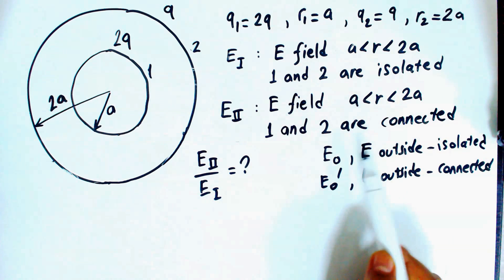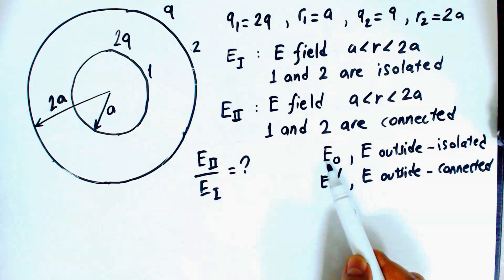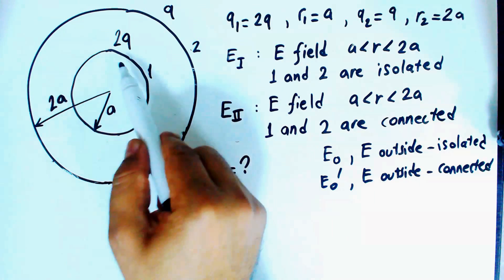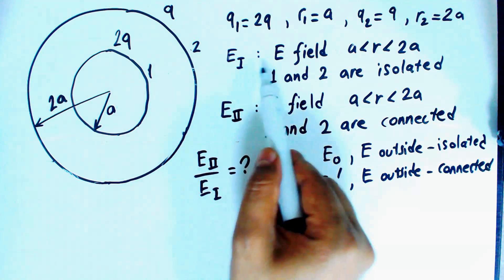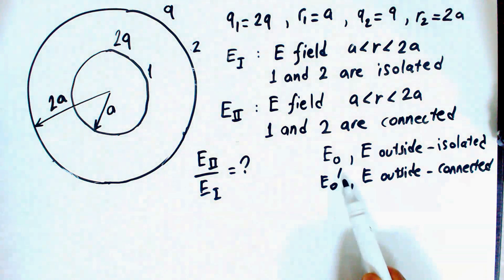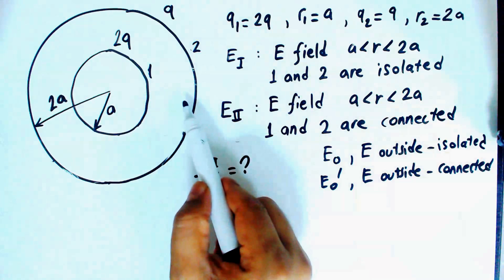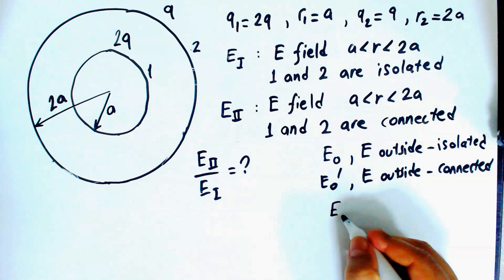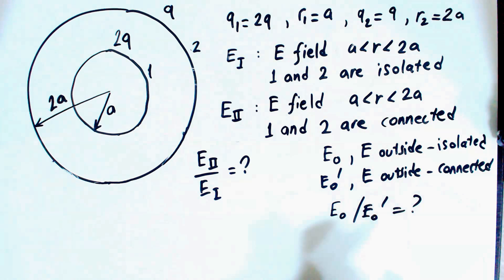We have one more question. Define EO, the electric field outside — outside the second shell — in the case where the two shells are isolated with these charges. And I define EO prime, the electric field outside the shell when these two shells are connected to each other. I will calculate EO divided by EO prime.